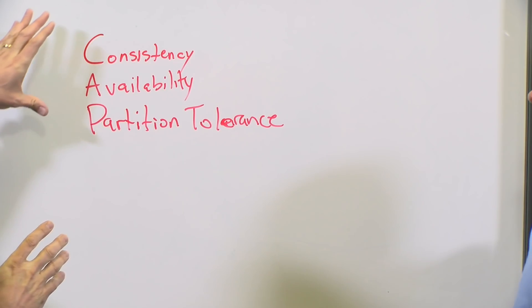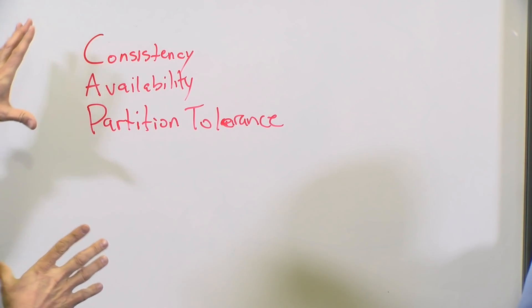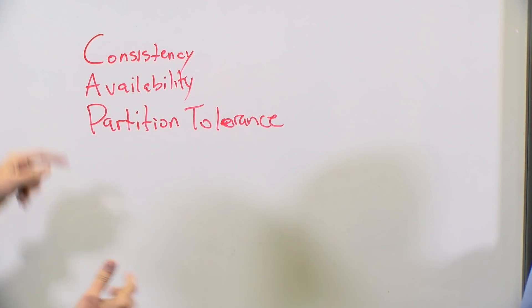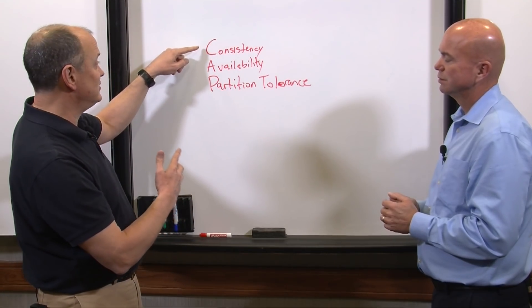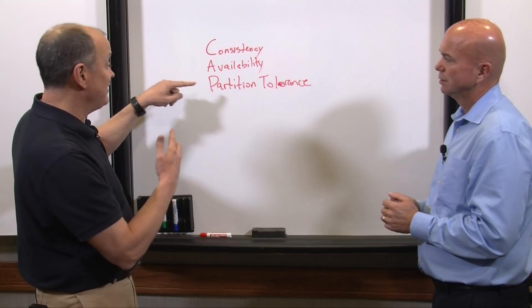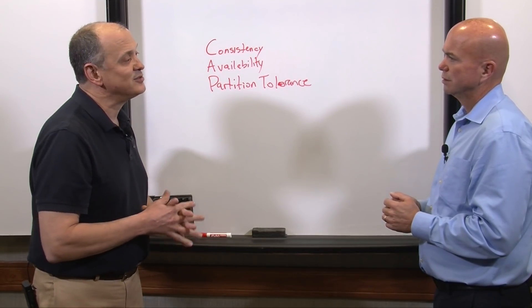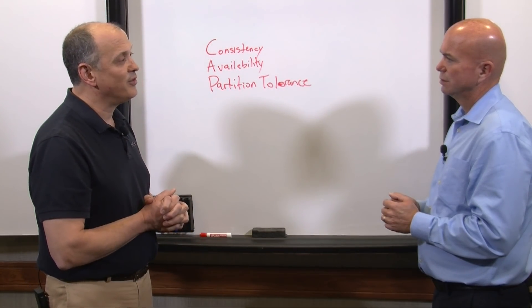The CAP principle — now a CAP theorem — tells us that if you look at these three attributes: consistency, availability, and the ability to handle partitions, it's actually impossible to deliver all three. So you only have to deliver two. A lot of times you'll hear this stated as: consistency, availability, partition tolerance — pick two.